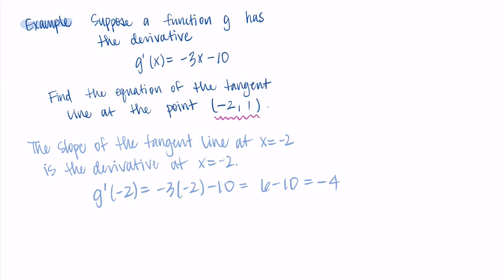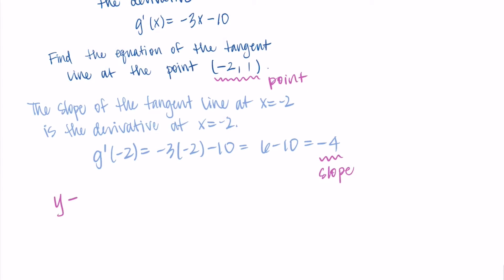Then we're almost there. We have the point that's negative 2, 1, and now we have a slope. It's negative 4. So we're going to use point slope form to put this all together. I have y minus 1 equals negative 4 x minus negative 2. That's our point slope form.